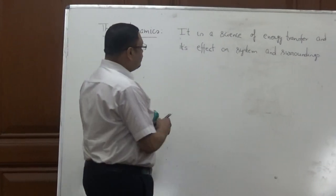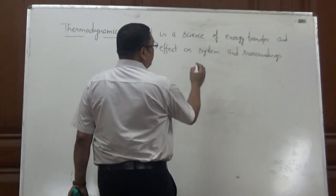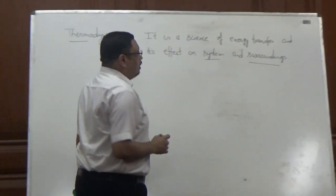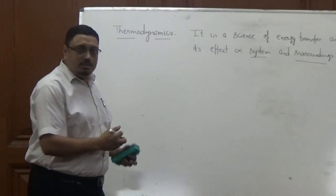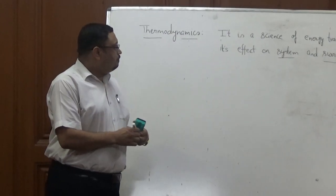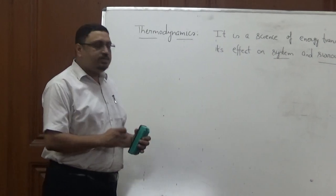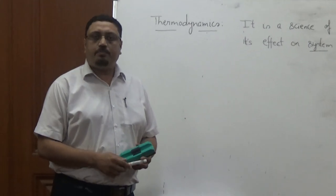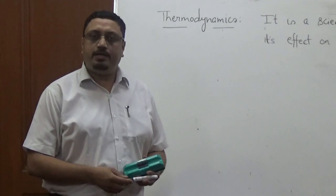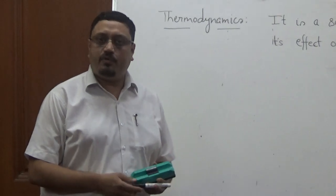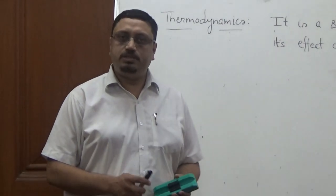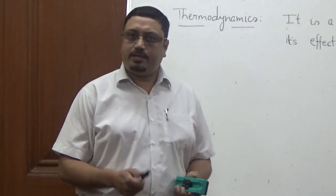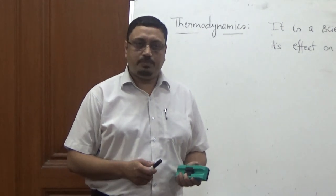There are two important terms here: system and surroundings — we will pick up these terms in a few minutes. As we know, energy exists in different forms. It may be in the form of kinetic energy, potential energy, heat, work, electrical energy, magnetic energy, and so on.